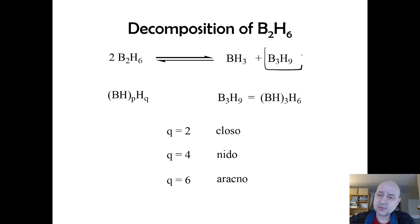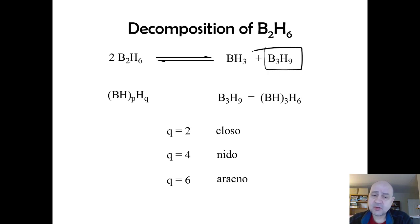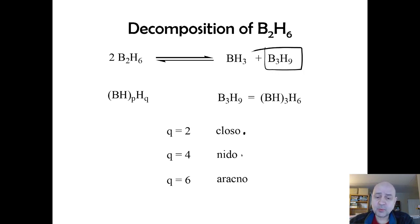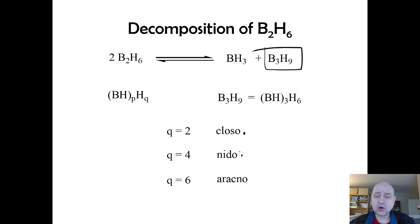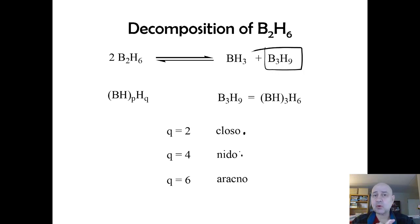The second simplest cluster is B3H9. Boranes can make three different types of clusters: either completely closed (closo), slightly open (nido, as in nest), or completely open (arachno, as in spider). There is a network of boron-boron bonds — borane can obtain its octet by making boron-boron bonds, bridging hydrogens, or terminal hydrogens, and can also form three-center two-electron boron-boron-boron bonds.